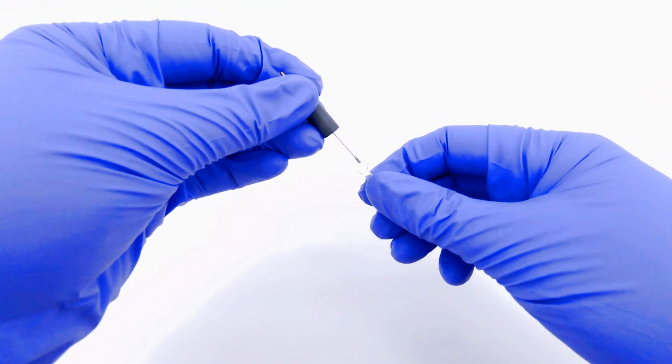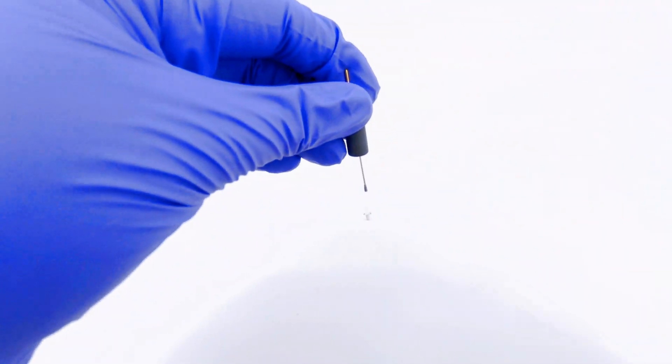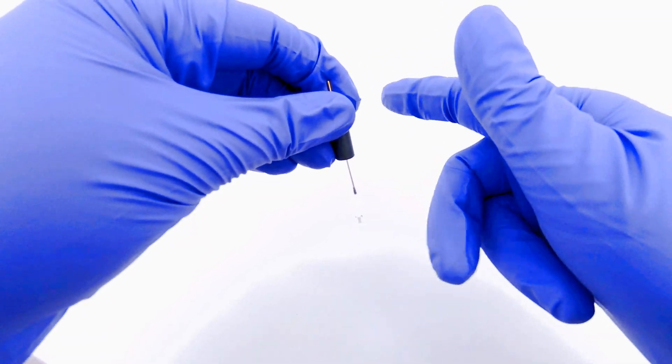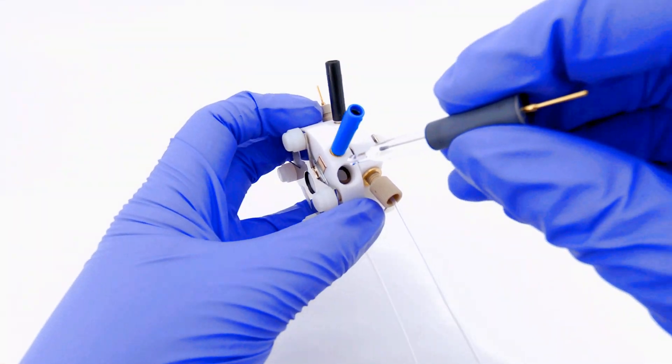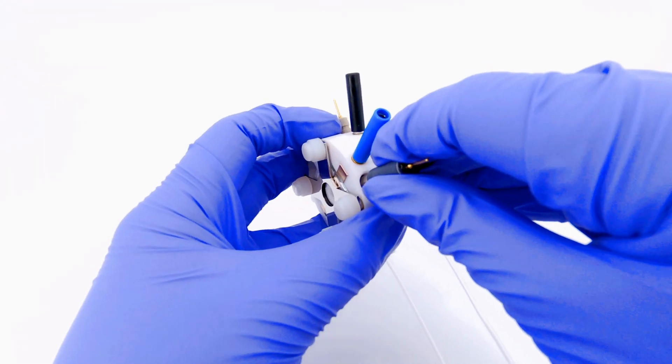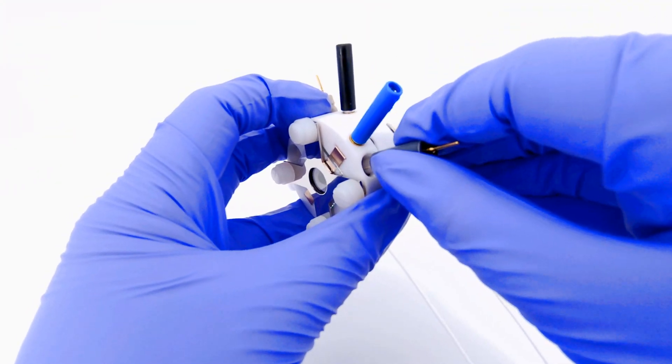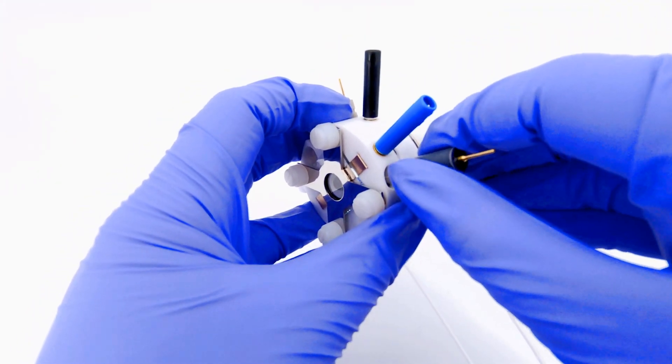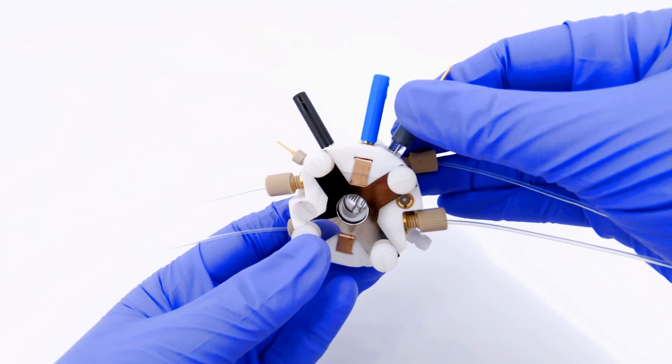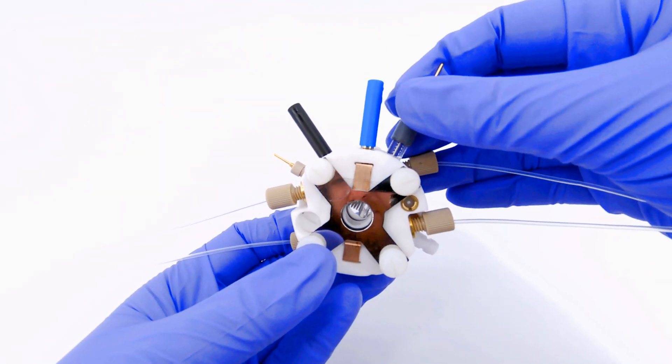Before placing the reference electrode into the cell, make sure to remove the cap and tap to remove any trapped bubbles by the frit. Then, push the reference electrode in by applying pressure and twisting. Make sure the frit of the electrode is approximately halfway into the cell chamber.